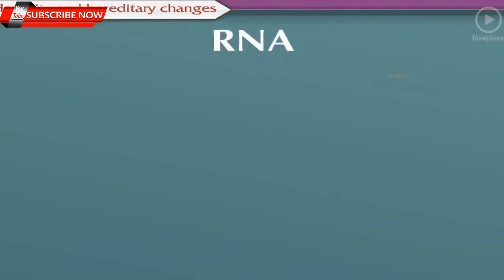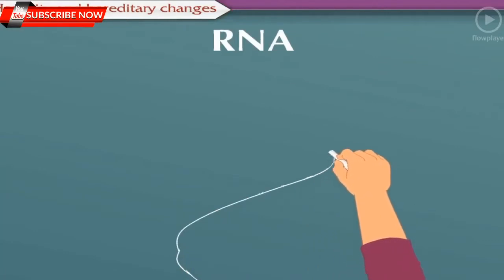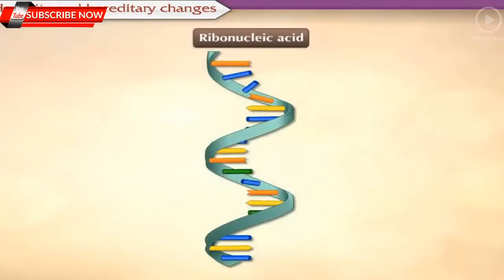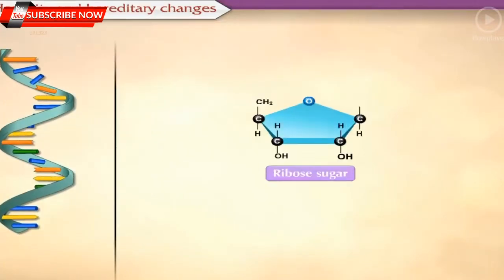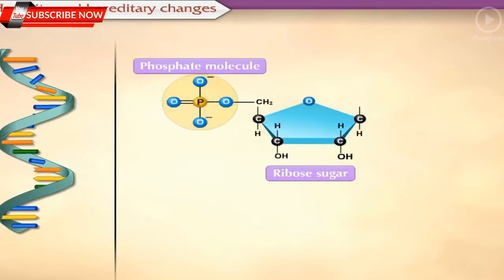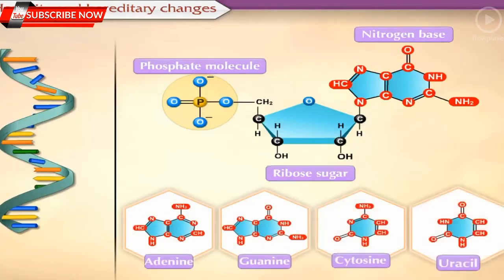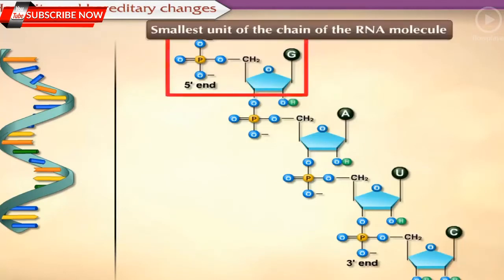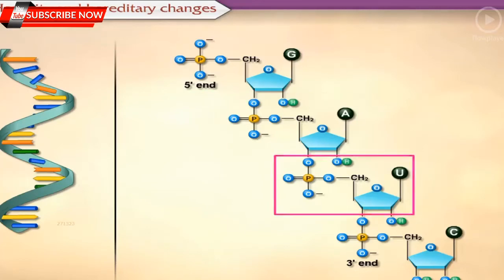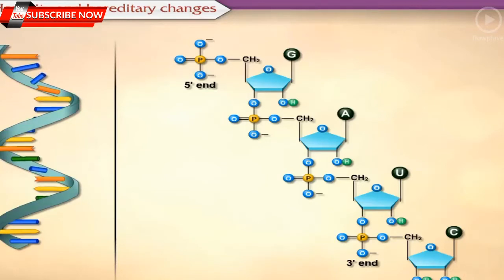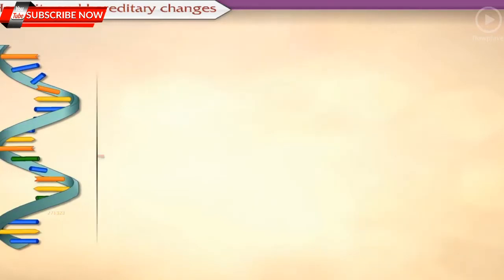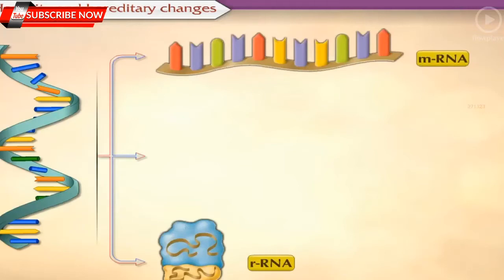After DNA, let us revise about the types of RNA. RNA stands for ribonucleic acid. This nucleic acid is made up of ribose sugar, phosphate molecule and four types of nitrogen bases: Adenine, Guanine, Cytosine and Uracil. The nucleotide, which is the smallest unit of the RNA chain, is formed by a combination of ribose sugar, phosphate molecule and one of the nitrogen bases. A large number of nucleotides are bonded together to form the macromolecule of RNA. According to function, there are three types of RNA: rRNA, mRNA and tRNA.